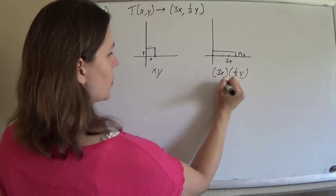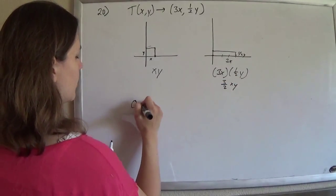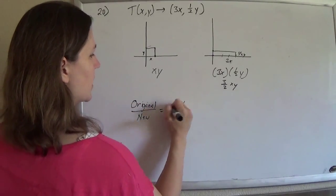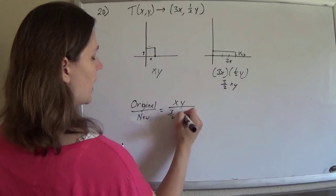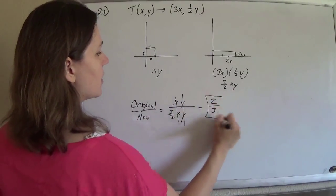So just 3 halves x, y. And they want the ratio of the original to the new. So the original was x, y, and the new is 3 halves x, y. So those cancel, and you just get 2 thirds.